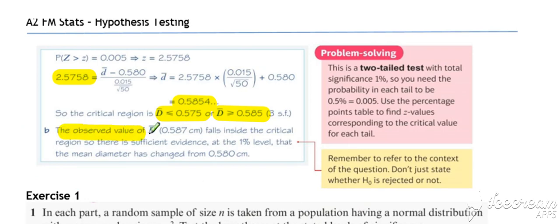So here we have the observed value is 0.587. It falls inside the critical region. So there is sufficient evidence to reject the mean has changed.